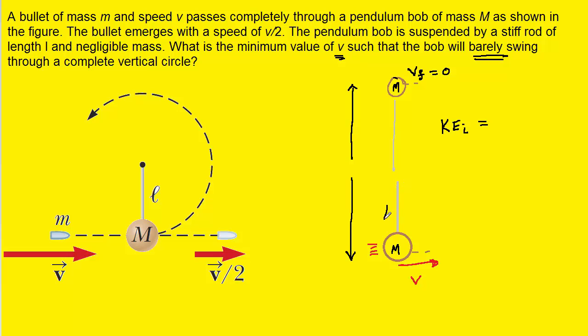Note that the length of the string right here was L and that this length also would be L. Therefore, the total height that the bob is located above its original position would simply be twice L.